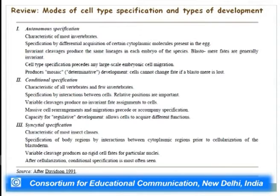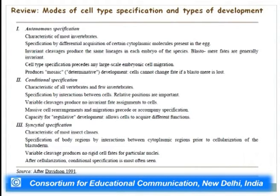If a particular blastomere is lost, other blastomeres take up its function and still give rise to the normal development — the lost structure still appears. Another kind of specification occurs in most insect classes: syncytial specification. This is the specification of body regions by interaction between cytoplasmic regions prior to cellularization of the blastoderm. Variable cleavages produce no rigid cell fates for particular nuclei, and after cellularization, conditional specification is most often seen.